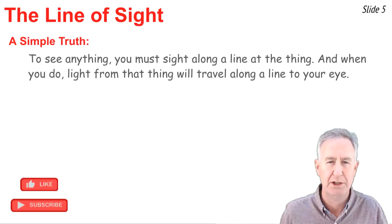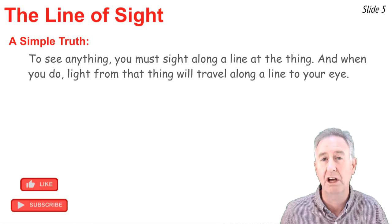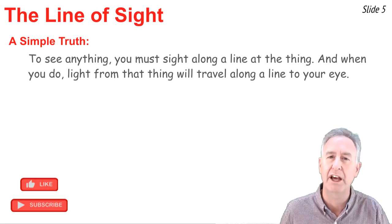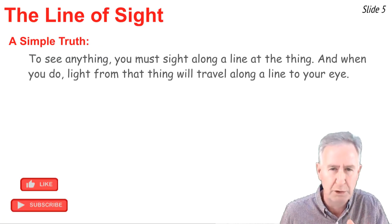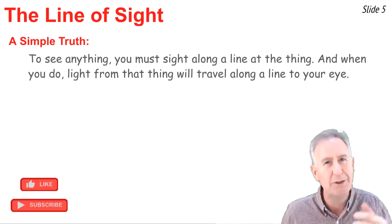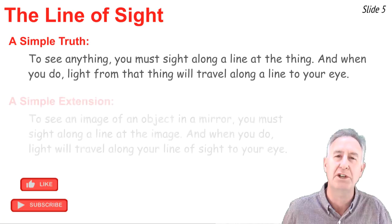Now when you looked at these objects, you were exercising a simple truth that to see anything, you must look along a line at the thing. And when you do, light from that thing will come to your eye along your line of sight. The line of sight is what you have to do in order to see something. You have to point it at a particular object. You have to look along the line of sight to see anything. And then light comes along that line to your eye.